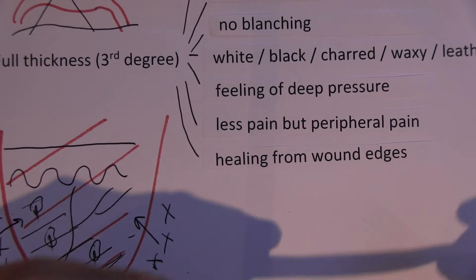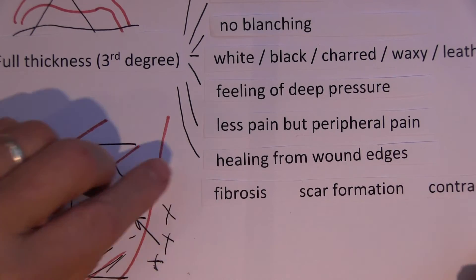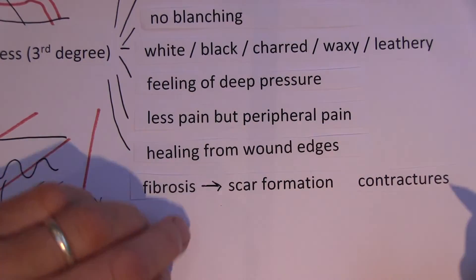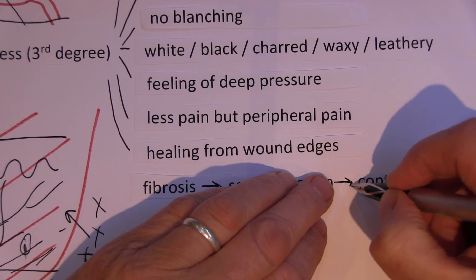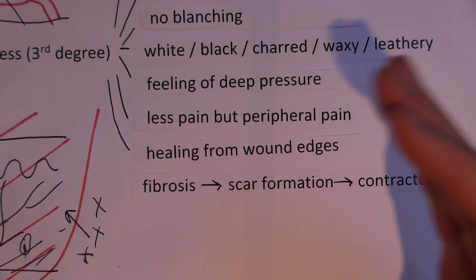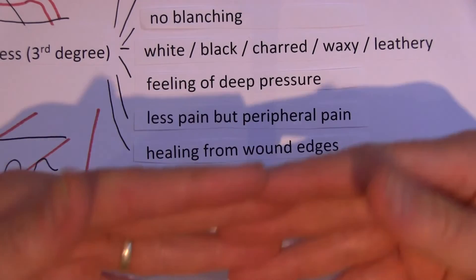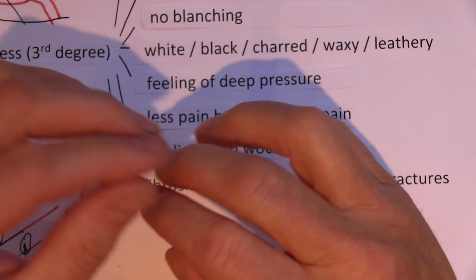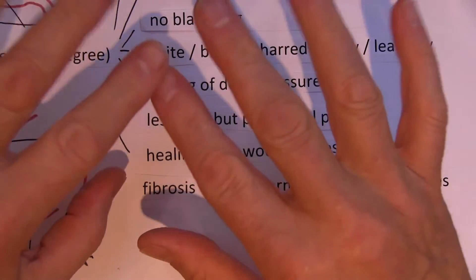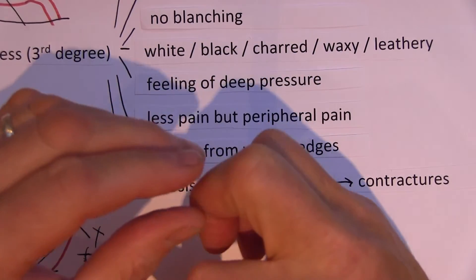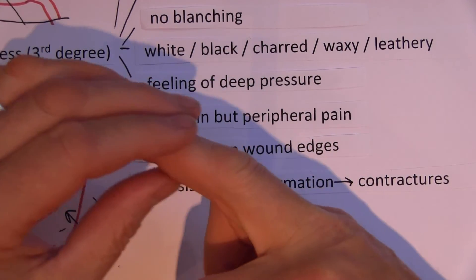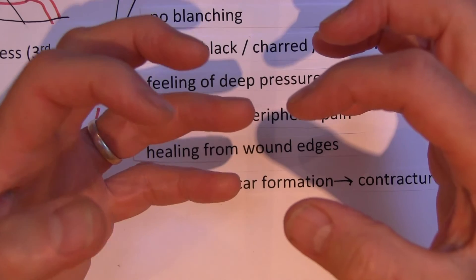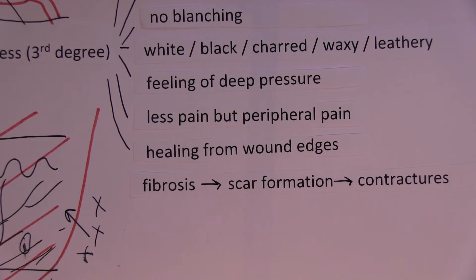With full thickness burns we get more fibrosis — more healing by scar tissue. The fibrosis means scar tissue, and scar tissue means contractures, because as scars mature they contract. Scars are contractile, like muscles — they get smaller with time. For example, if a scar is over a joint, it will contract and replace the normal elastic skin with rigid tissue, causing claw-like contractions in the hands and other parts of the body, depending on location.